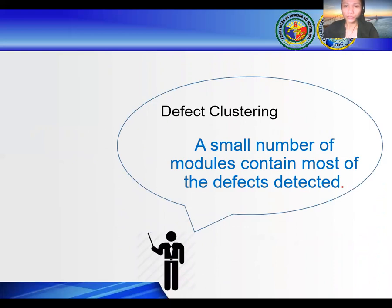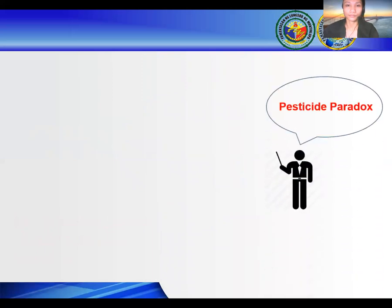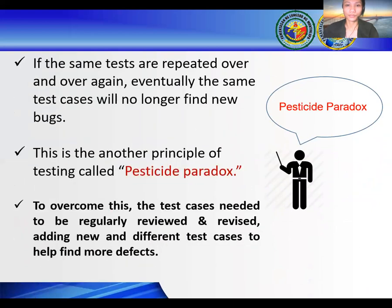Defect clustering states that a small number of modules contain most of the defects detected. With experience, you can identify such risky modules, but this approach has its own problem. If the same tests are repeated over and over again, eventually the same test cases will no longer find new bugs. This is another principle of testing called the pesticide paradox. To overcome this, test cases need to be regularly reviewed and revised, adding new and different test cases to help find more defects.